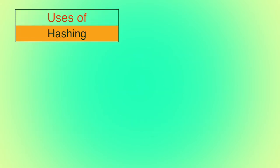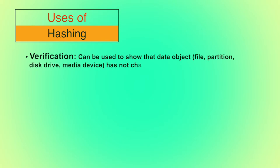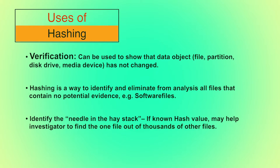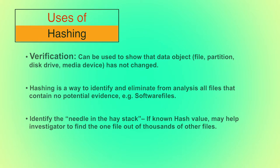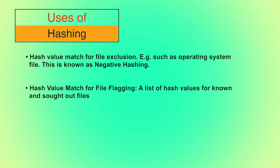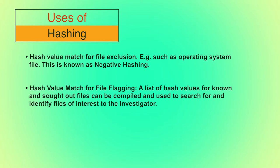What are the uses of hashing? We can use hashing for verification — to show that a data object has not changed. It specifically helps forensic experts while producing evidence in court of law. Hashing is also a way to identify and eliminate from analysis all files that contain no potential evidence, such as software files. It can help identify the needle in a haystack — if a known hash value helps an investigator find one file out of thousands. This is also known as negative hashing. Hash value matching for file flagging is a list of hash values for known files compiled to search for and identify files of interest to an investigator.